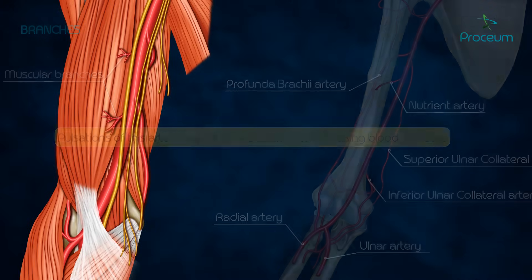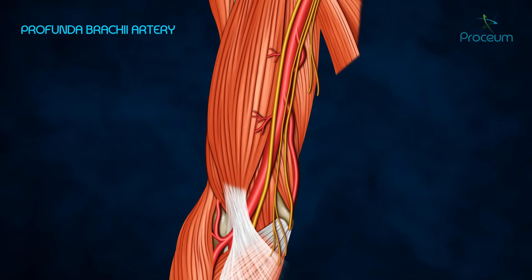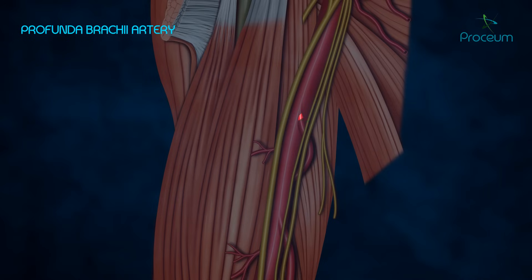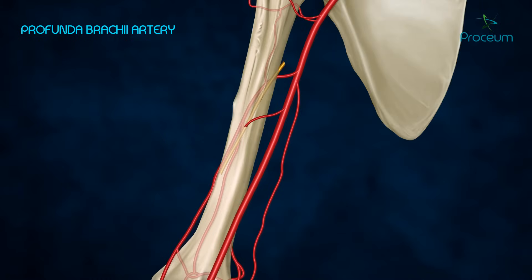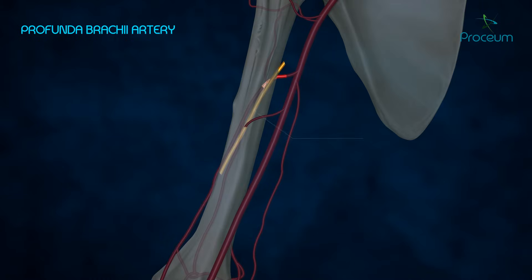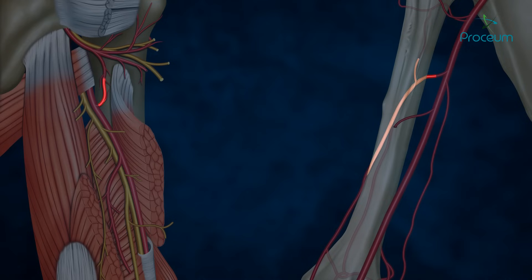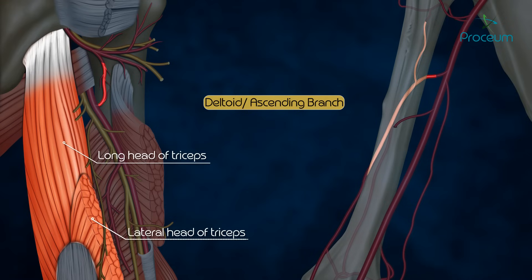Profunda brachii artery: it arises from the brachial artery posteromedially, below the lower border of the teres major. It leaves the lower triangular space along with the radial nerve and passes down along the radial groove. It then divides into the deltoid or ascending branch, which ascends between the long and lateral heads of the triceps.